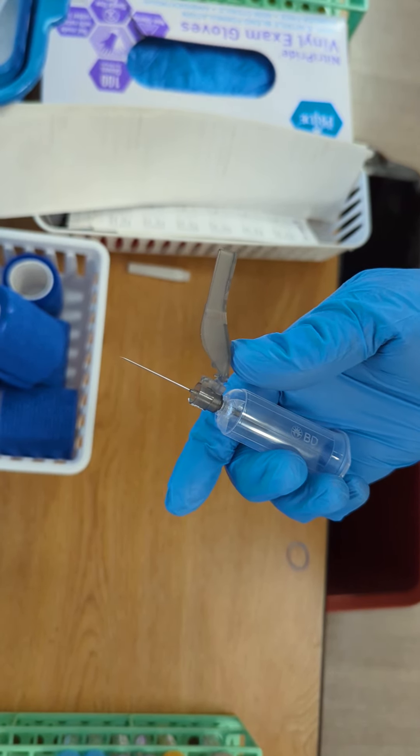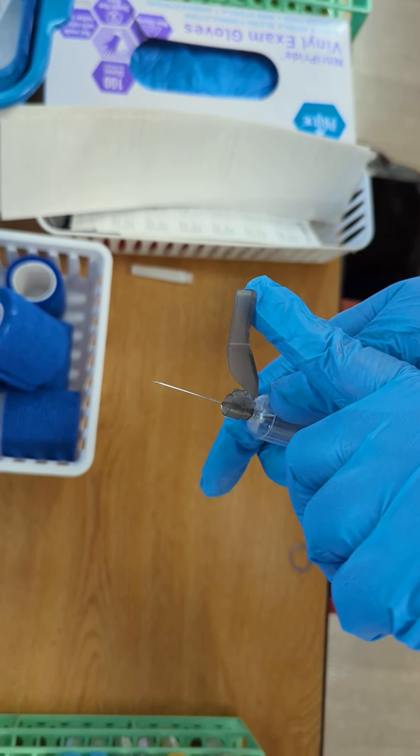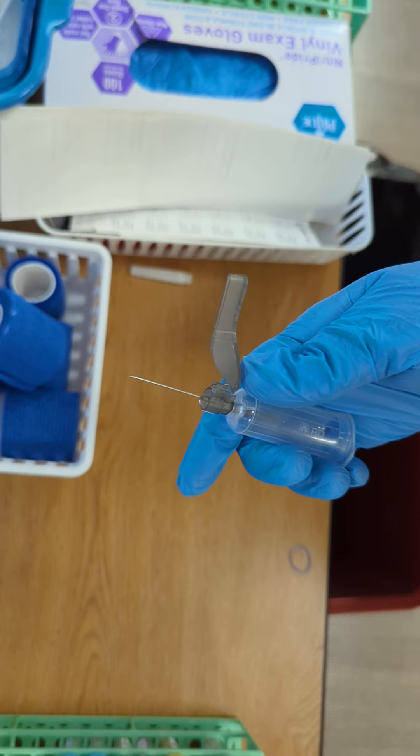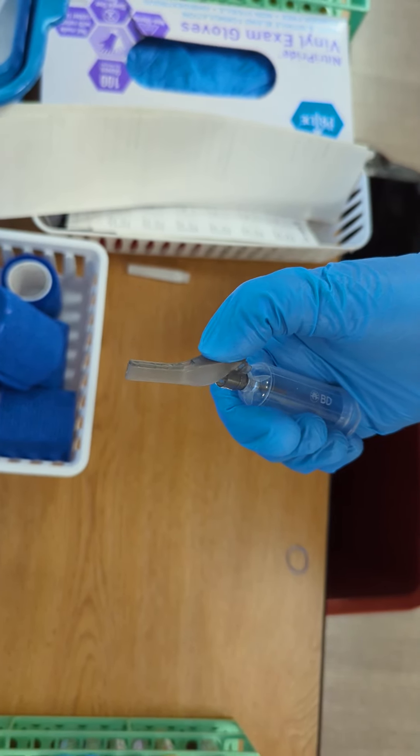There are some lines down here at the bottom that will keep your finger from slipping. You want your thumb all the way down here. If you reach over with your other hand to safety it, that is a safety violation. You will only use the hand that's holding the needle. You're going to put your thumb here and just push it up until it clicks.